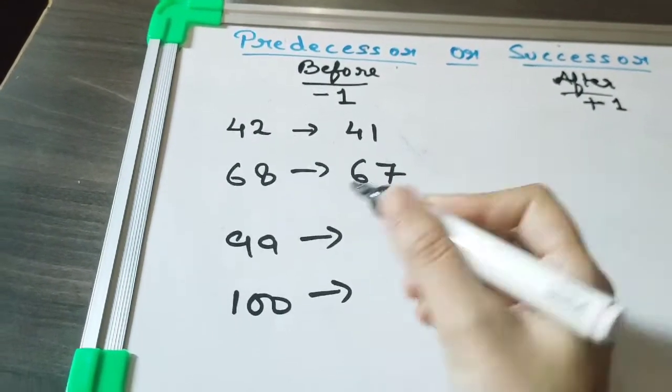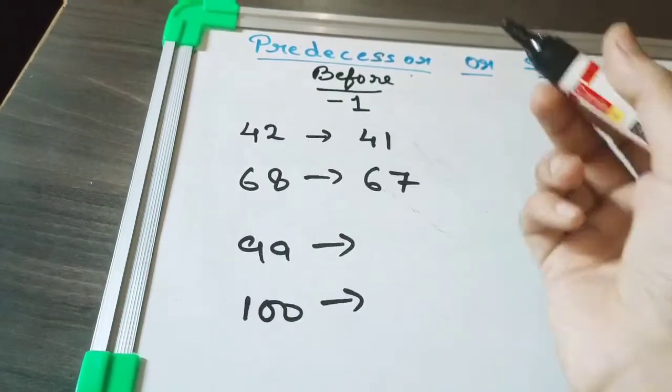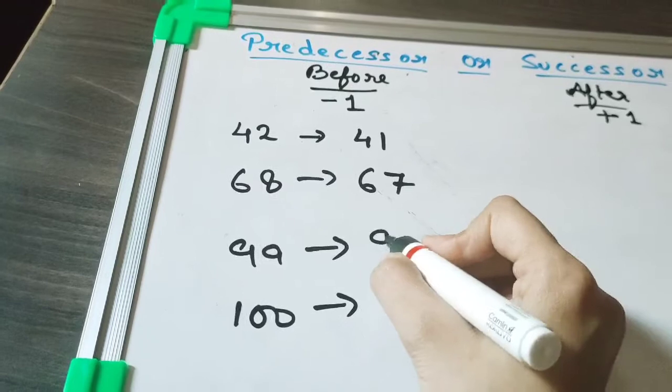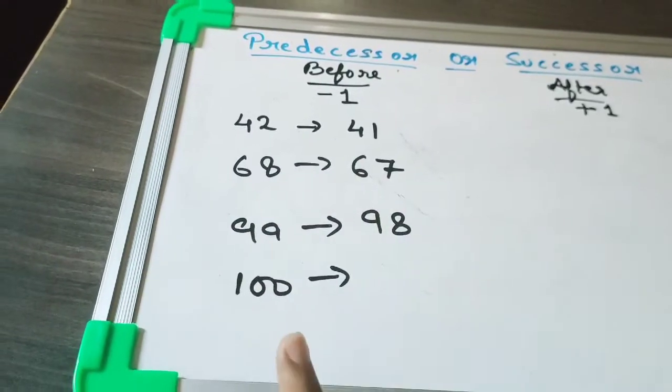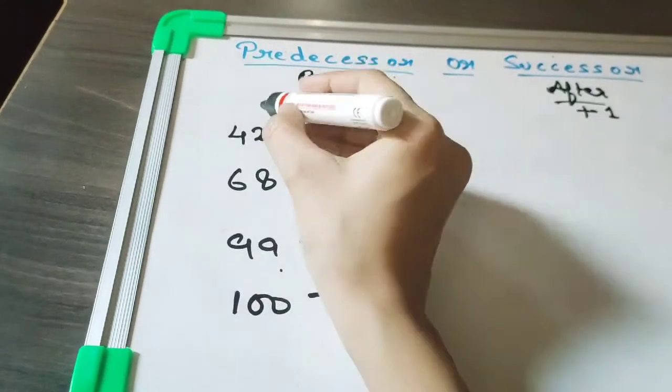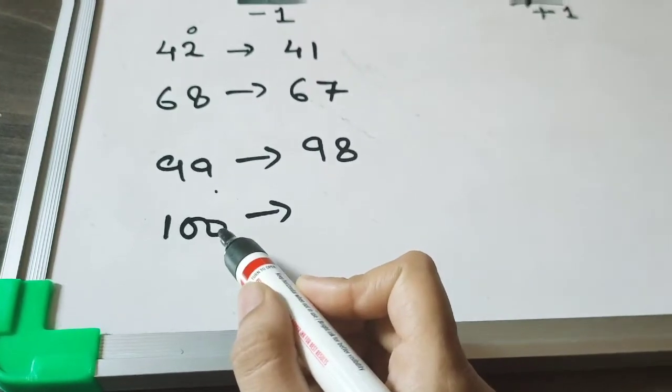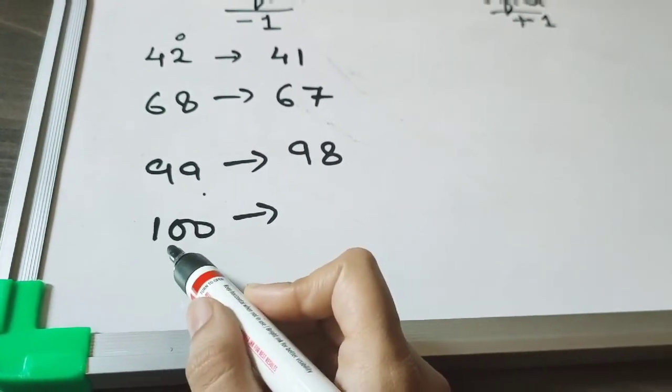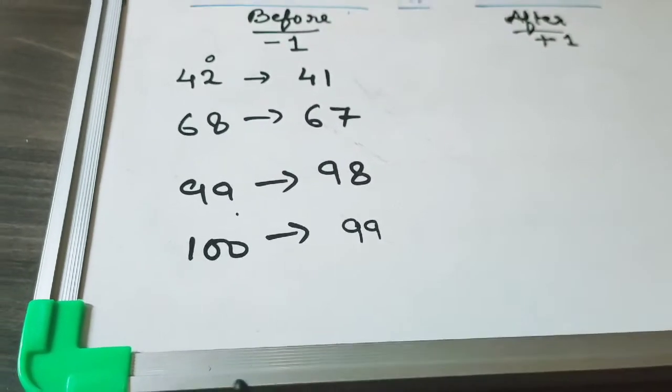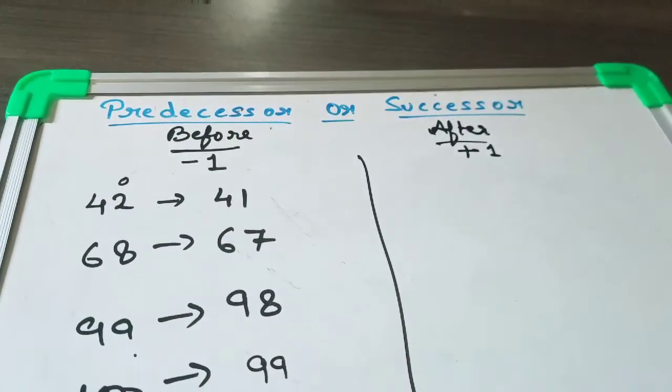In 99, what will be the before number or predecessor? That is 98. We have to minus 1. Remember that from the ones place - that is also very important, this is ones place - so we have to subtract from ones place only. Now this is 100. If we subtract 1 from 100, we will get 99. I hope this is clear to you. Now let's do the successor.